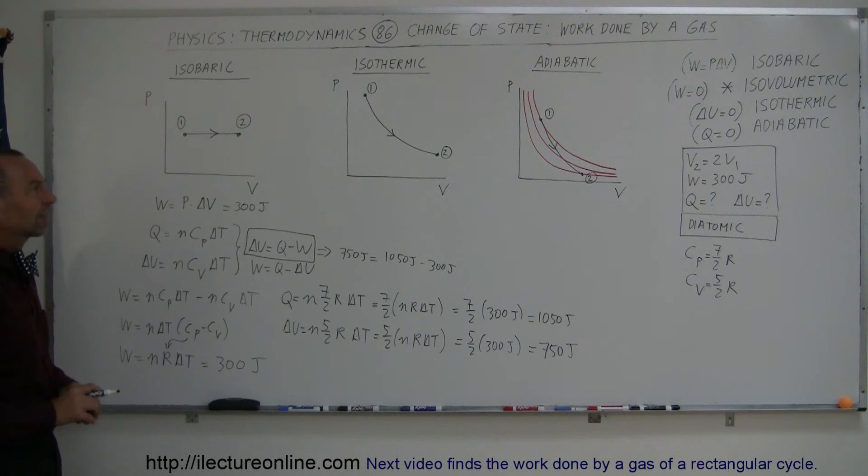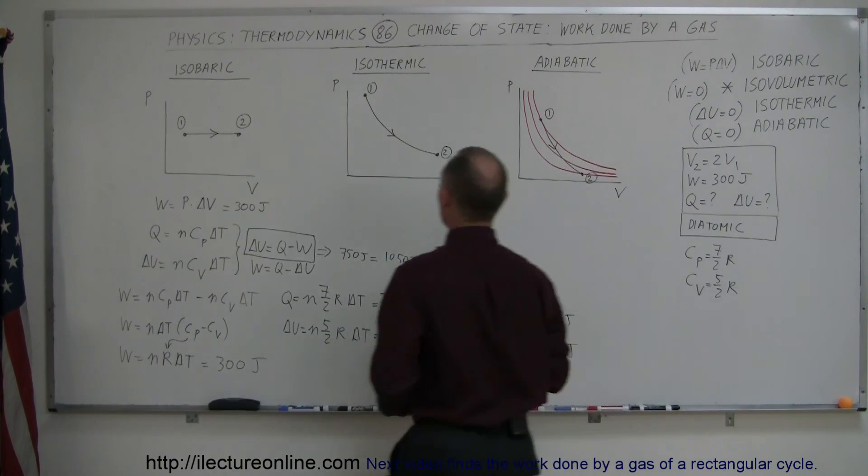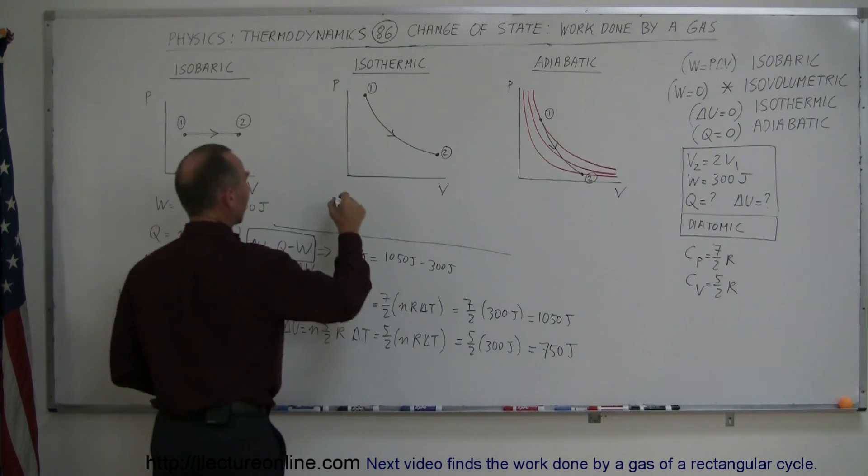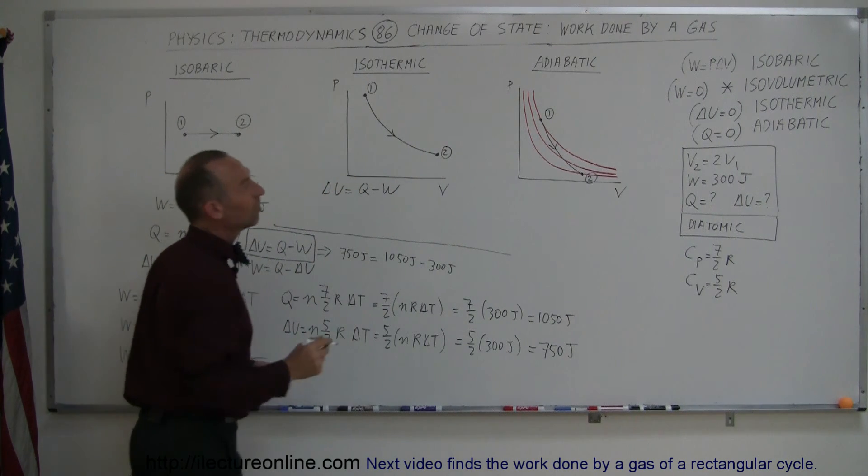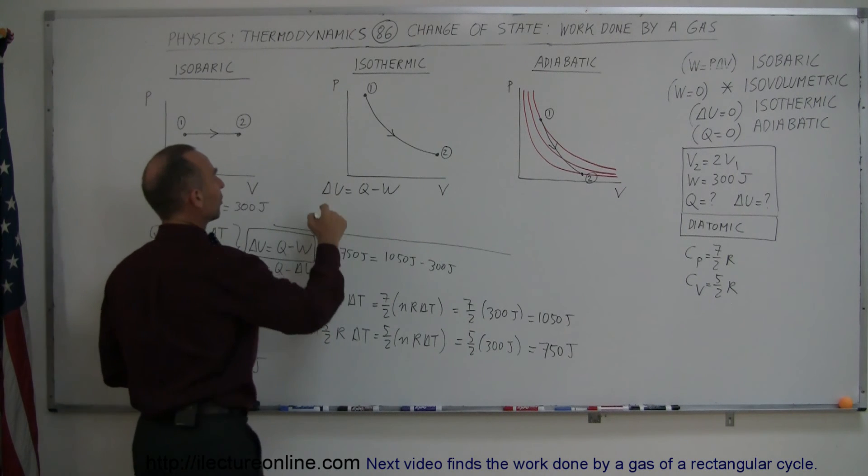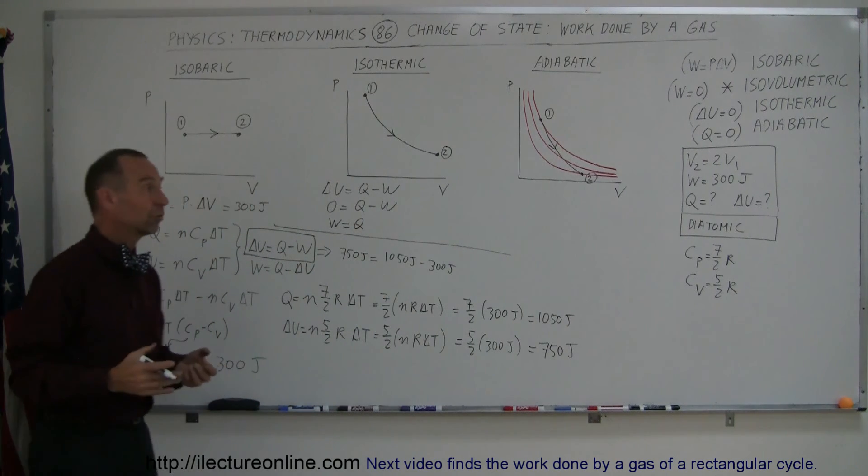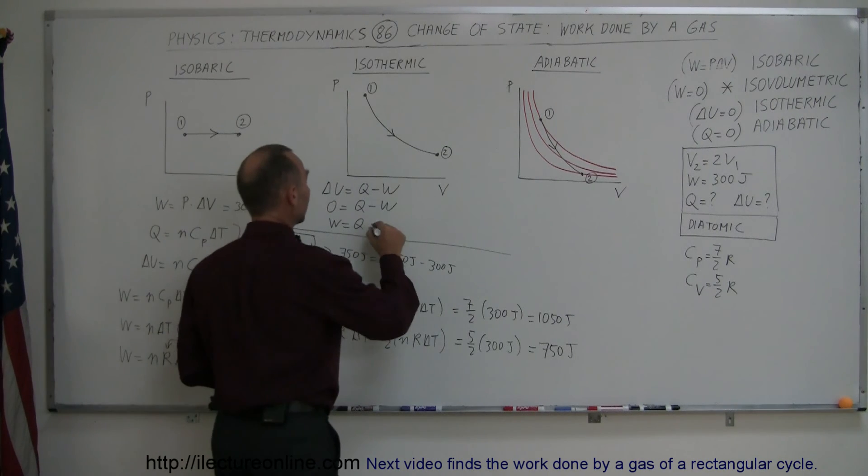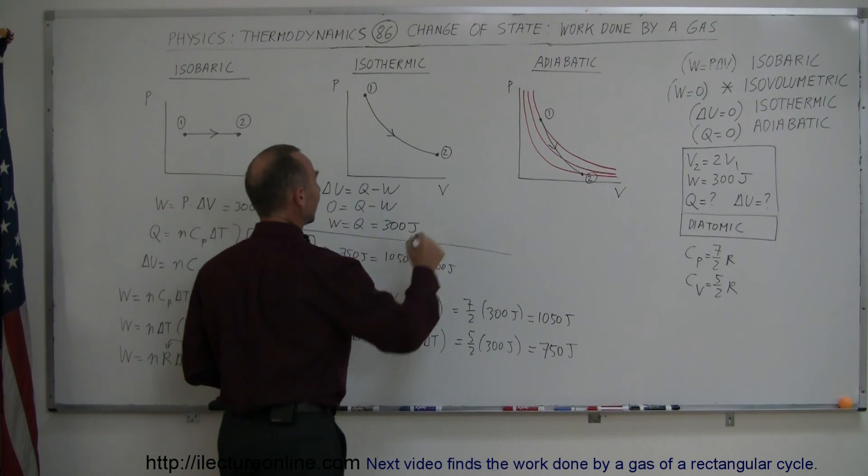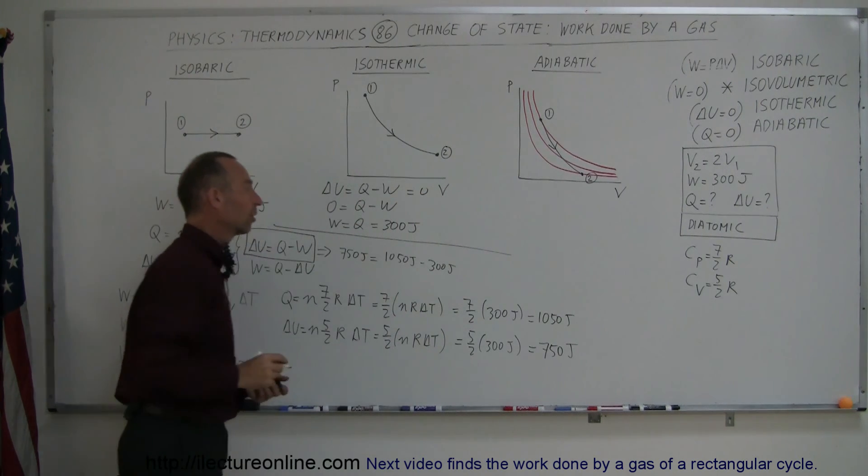Isothermal process isn't that complicated at all, because in that case, an isothermal process, delta U is equal to 0. And so that means, let me put a line here, that if we use the first law of thermodynamics, delta U equals Q minus W. Since in isothermal process delta U is 0, we get 0 is equal to Q minus W. And so therefore, W is equal to Q, or Q is equal to W. And so if the work done is 300 joules, that means heat added to the gas is 300 joules as well. So this becomes 300 joules. Easy to find. Delta U is 0, and W is 300 joules.